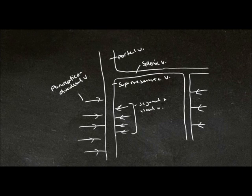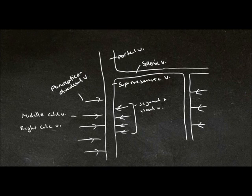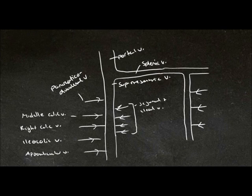Draining the large intestine, we have the middle colic vein and the right colic vein. The middle colic vein drains the transverse colon, the right colic vein is draining the ascending colon, the ileocolic vein is draining the cecum, and the appendicular vein is draining the appendix.